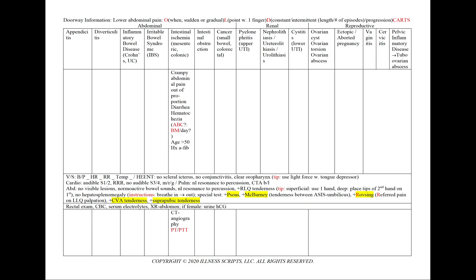In intestinal ischemia, which includes mesenteric and colonic ischemia, we'll see crampy abdominal pain that is out of proportion to the physical exam. We can also have diarrhea and hematochezia — using A, B, and C, noting bowel movements per day for amount. Our patient will classically be greater than 50 years old with a history of atrial fibrillation. We'll order a CT angiography and a PT and PTT.